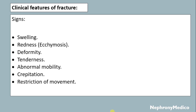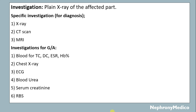Investigations: plain X-ray of the affected part is done. Specific investigation for diagnosis includes X-ray, CT scan, and MRI. Investigations for general anesthesia include blood for TLC, DLC, ESR, hemoglobin percentage, chest X-ray, ECG, blood urea, serum creatinine, and RBS.